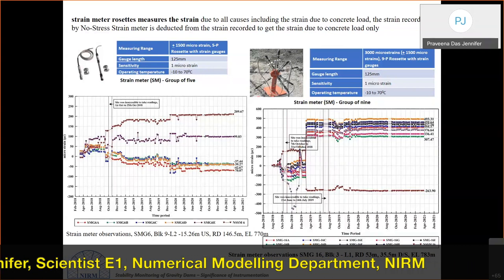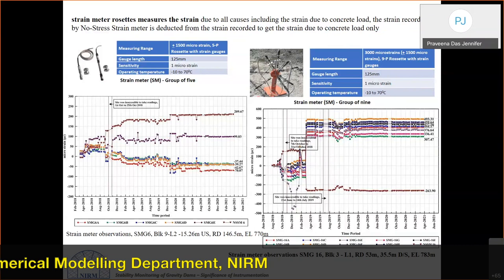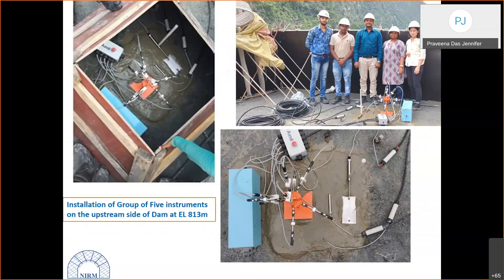At PHPA II, a group of nine strain meters is used at most levels, particularly at blocks 11 and 3. A typical installation combines a group of strain meters with a stress meter, a no-stress strain meter, a piezometer, and a temperature meter — five instruments co-located at one point. This co-location enables correlation studies between temperature, pore pressure, stress, and strain at a single joint.